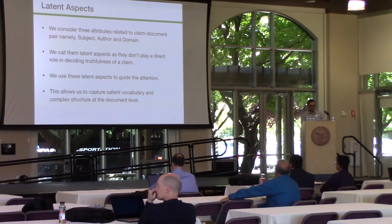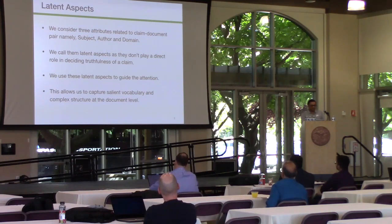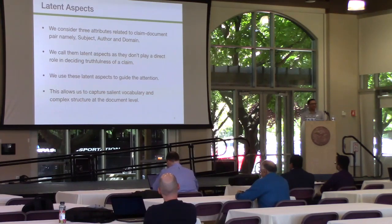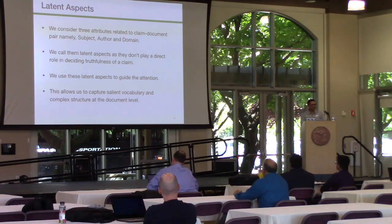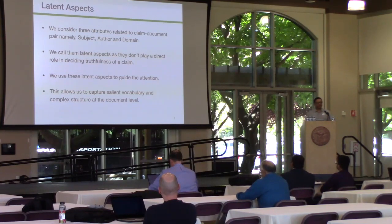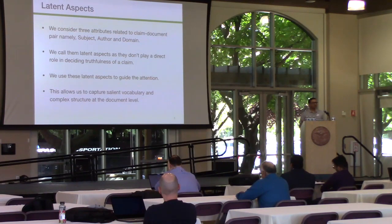Now let's see what latent aspects are. For a claim, we consider three attributes: the subject of the claim, the author of the claim, and the domain. The subject is the topic of the claim. The author is who said the claim — maybe Donald Trump or Hillary Clinton. The domain is where the search results were published when we search the claim on the web — like BBC, New York Times, or Washington Post. We call them latent aspects because they don't play any direct role in deciding the veracity of the fake news. But we hypothesize that if we use attention guided by them, they will guide attention to more significant contextual words — for instance, using author Donald Trump might highlight frequent words used by him.